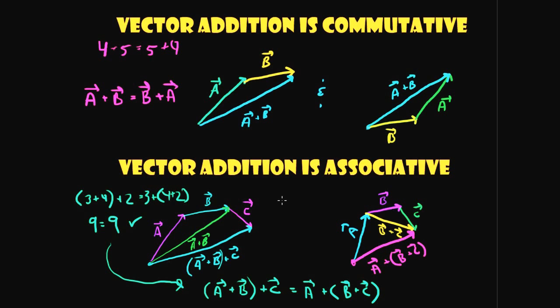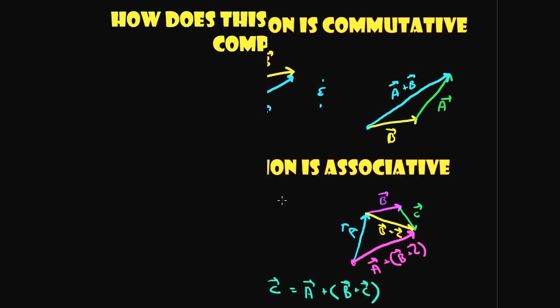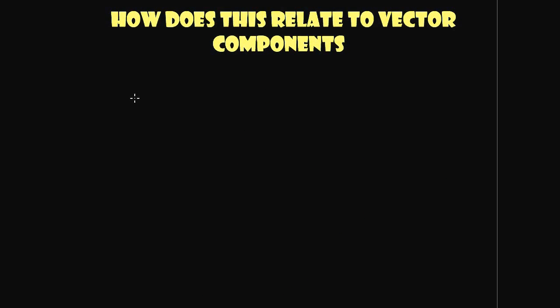The important thing to remember is don't get bogged down by vectors — they're very basic and simple to work with, and they let you do very interesting things in physics. Try to make friends with vectors and understand it's just simple laws you've seen many times. As we get further along we'll start adding unit vectors with quantities, but for now it's important to know these fundamental properties.